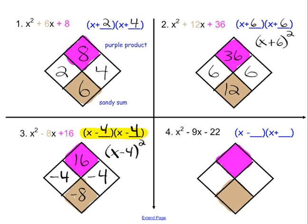Problem number 4, our purple product is negative 22, our sandy sum is negative 9. Looking for two numbers that multiply to negative 22 that add up to negative 9. One will have to be positive and one will have to be negative. So I just notated that in the final factored form already. And it looks like the numbers we're going to use, 22 is divisible by 2, 11 times.